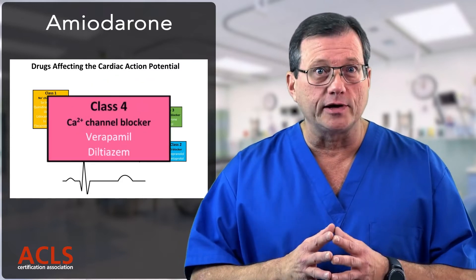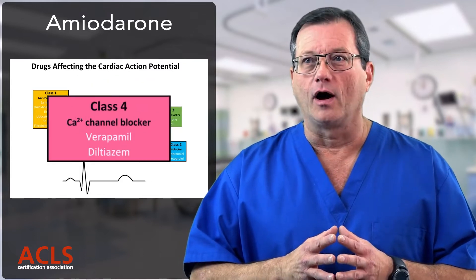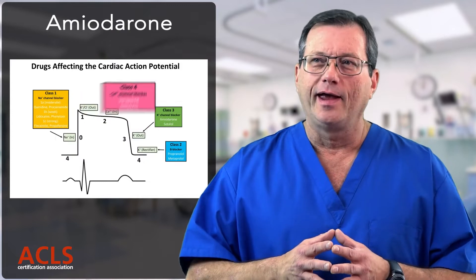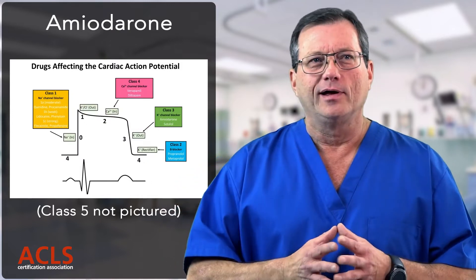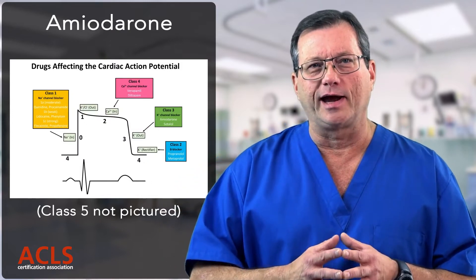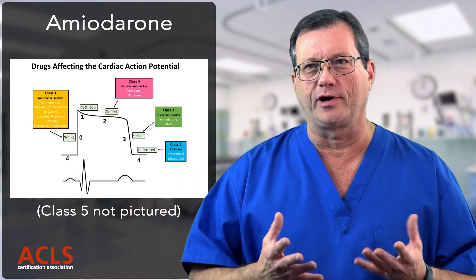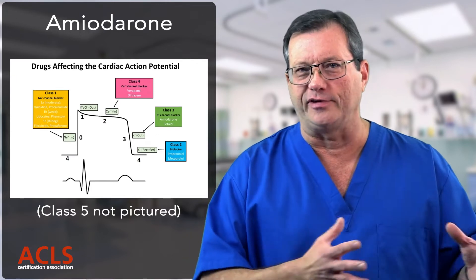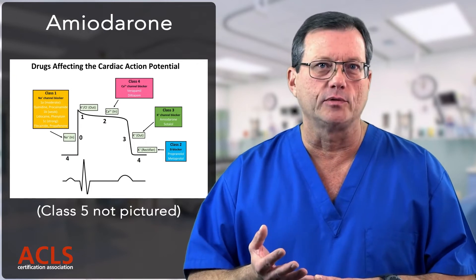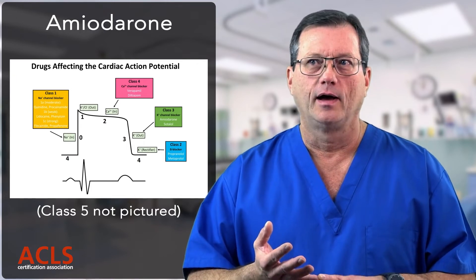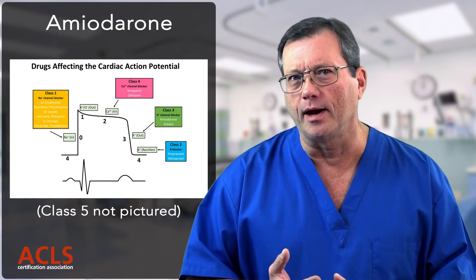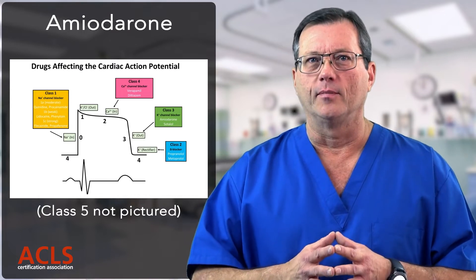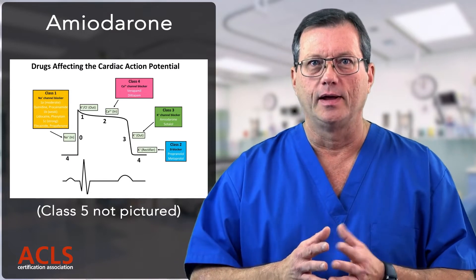Class 4 antiarrhythmics are calcium channel inhibitors. Then there's Class 5, which is kind of the stepchild of antiarrhythmics — it doesn't really fit in any other category. Adenosine would be in that group, and atropine might fall into that as well.